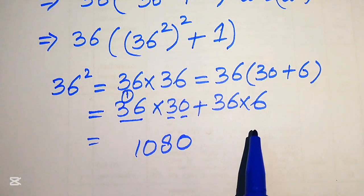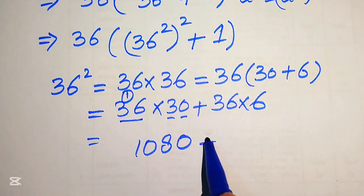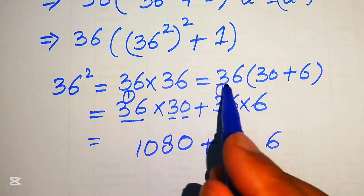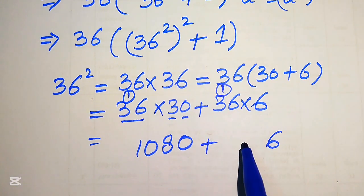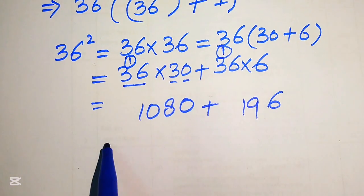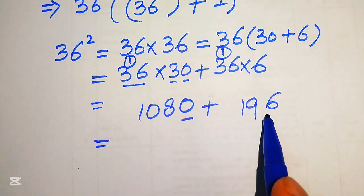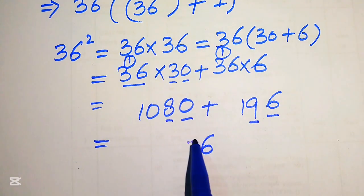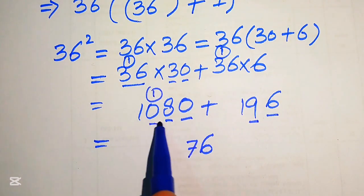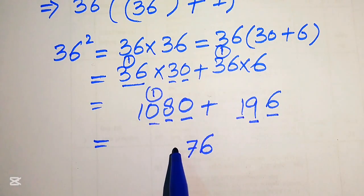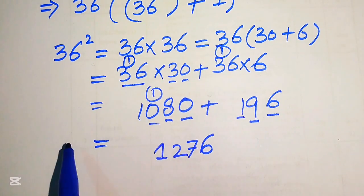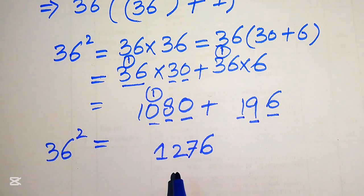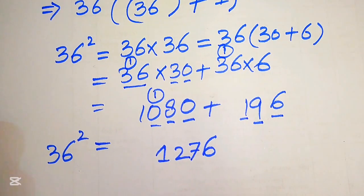Now for 36×6: 6×6 is 36, write 6 carry 3; 6×3 is 18, plus 1 is 19. So 36×6 = 216. Adding 1080 + 216: 0+6=6, 8+1=9 write... summing gives 1296. So 36 squared equals 1296.